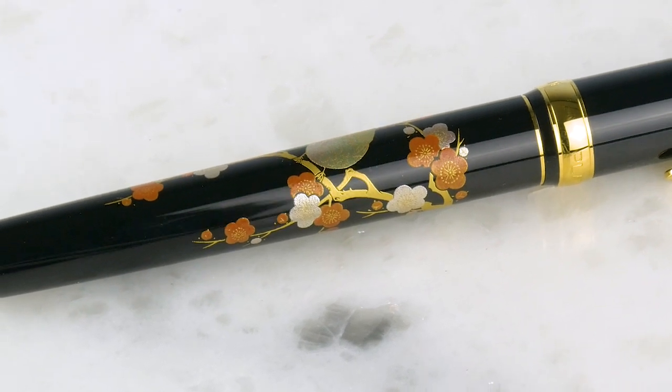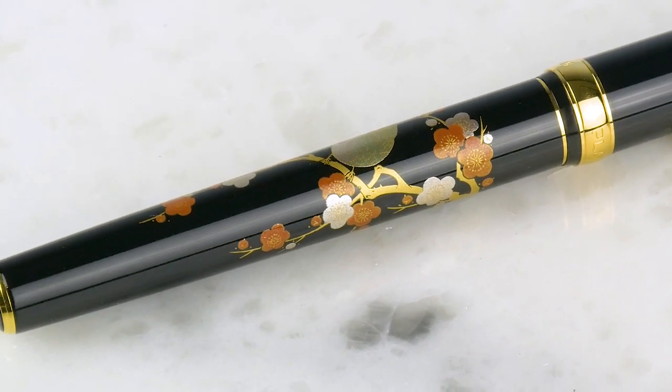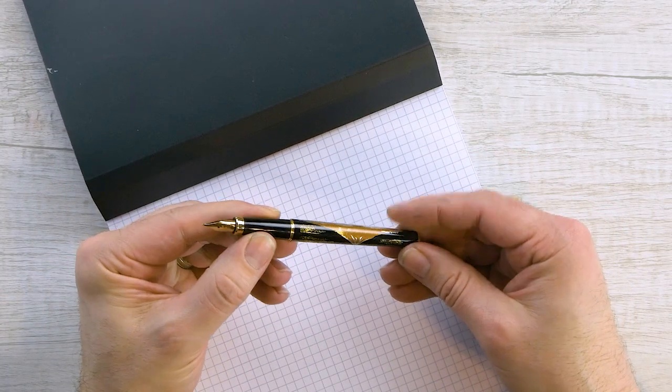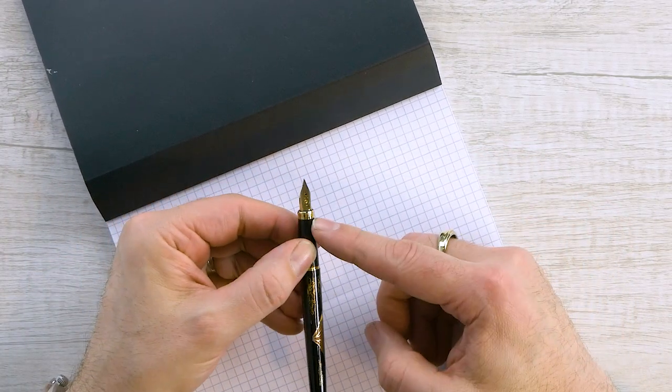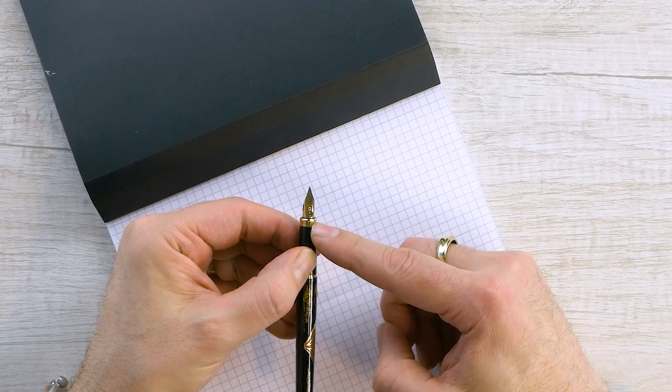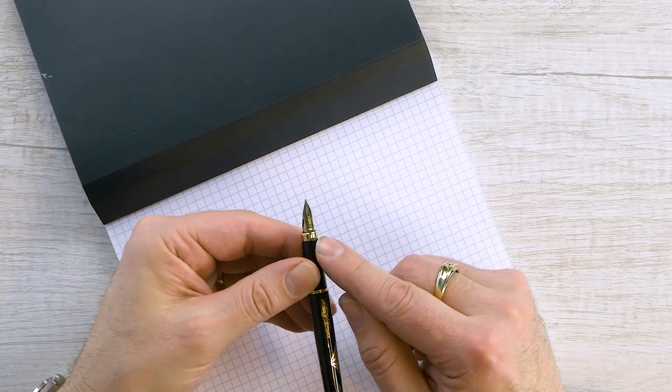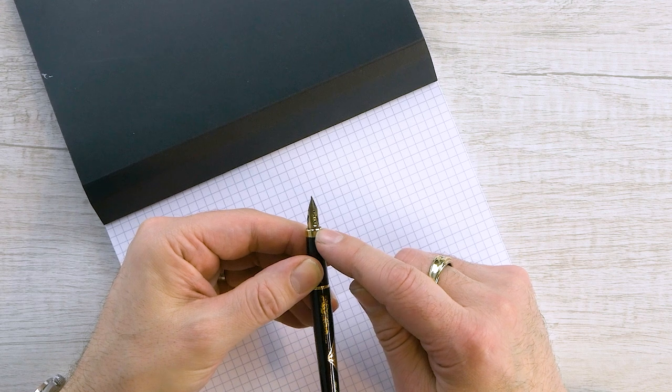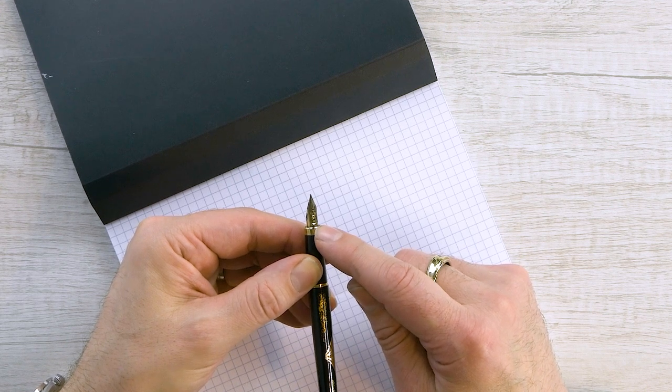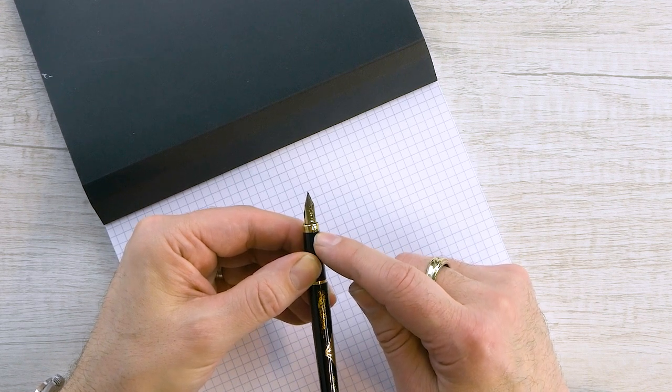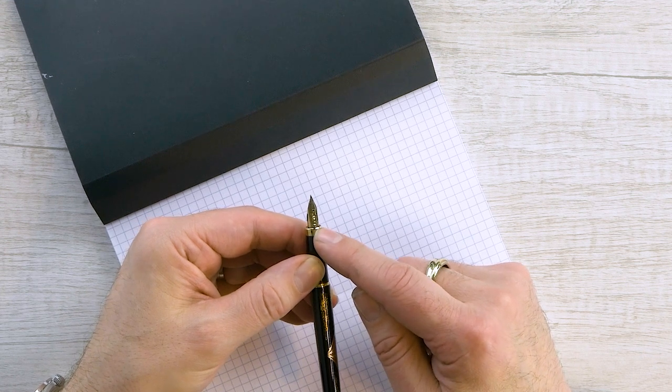Let's take a look at a writing sample. Okay, so I've got my Mount Fuji here. And this has the 18 karat medium nib. And if you take a look at the nib, you'll see underneath the platinum logo, there's a little what looks like a squished rectangle with a line through it. So that is, that means that's a medium nib.